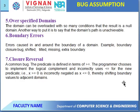Next: Overspecified Domain. The domain can be overlapped with so many conditions that the result is a null domain. Another way to put it is that the domain's path is unreachable. So one is the null domain and another is the unreachable domain — these are called overspecified domains.